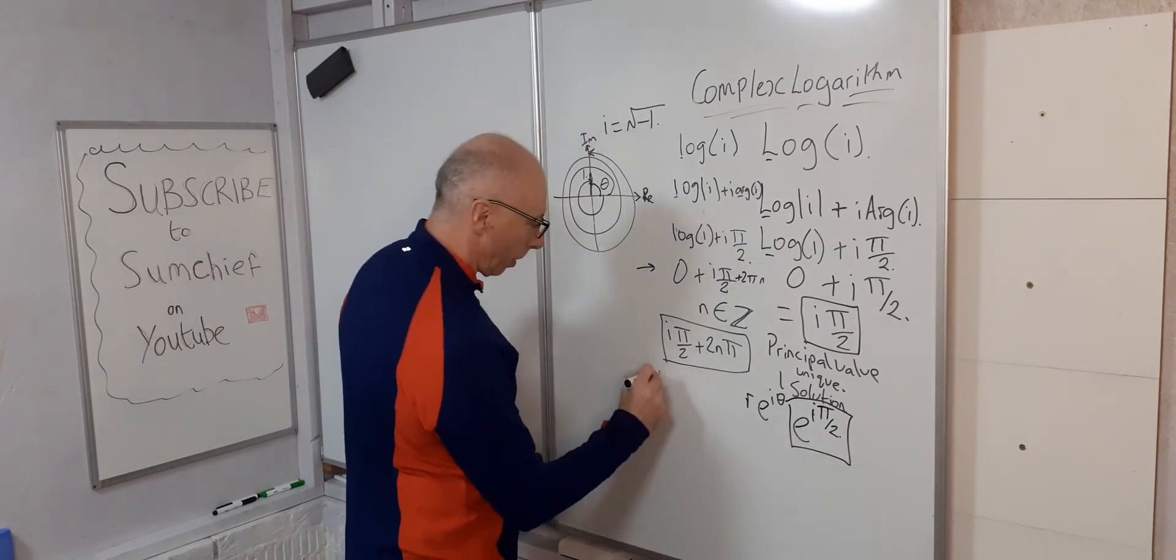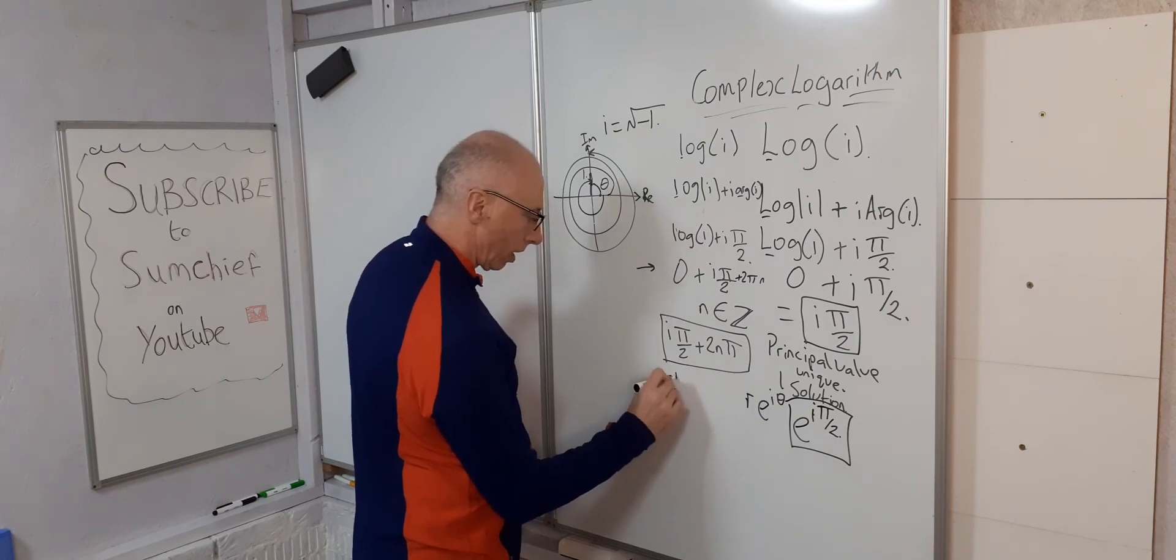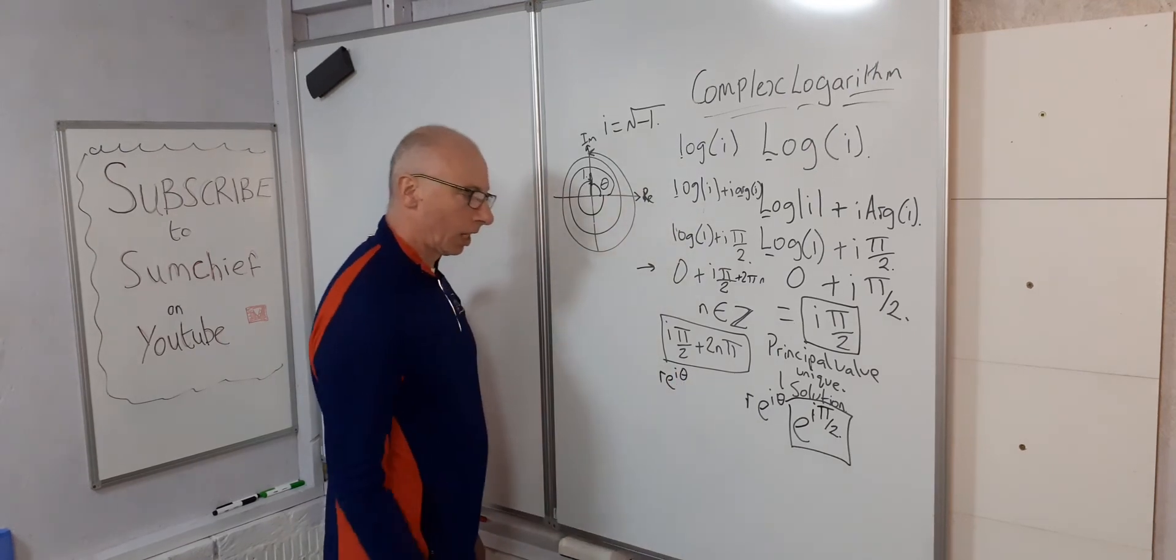So, for this one, we carry on with polar form. We've got e, r, e, pi, theta. This case, theta is a little bit different.